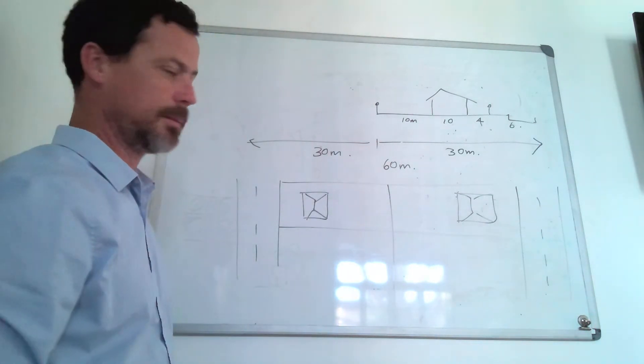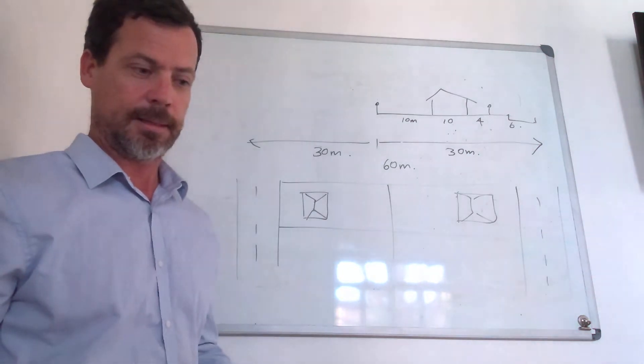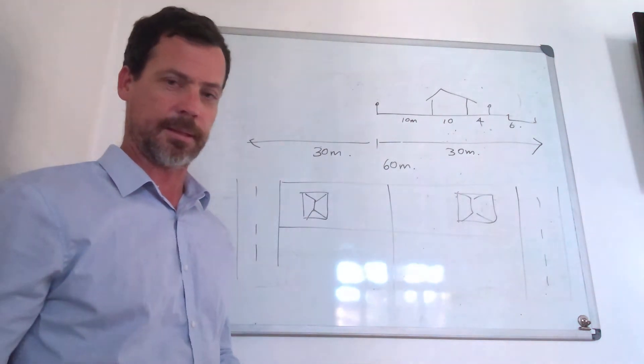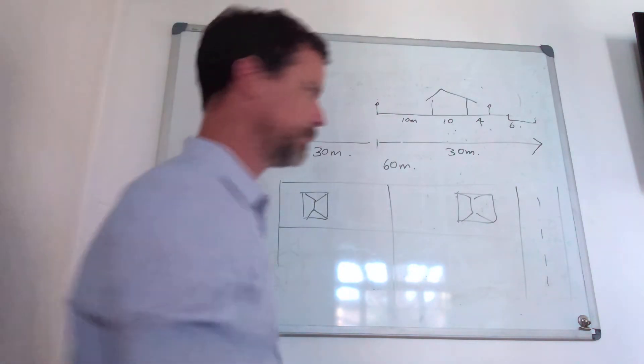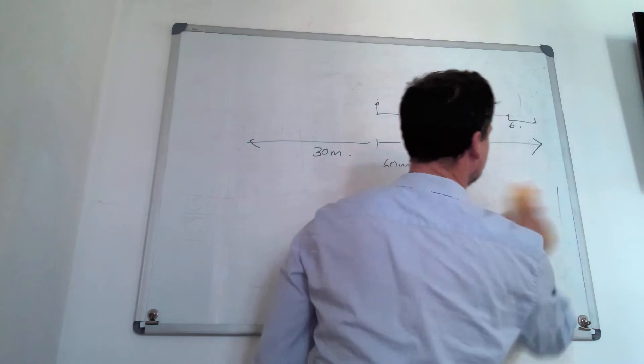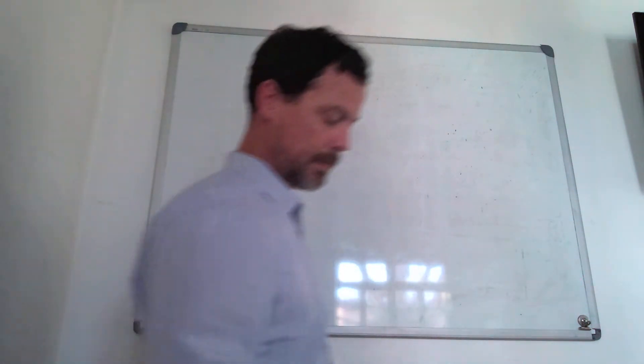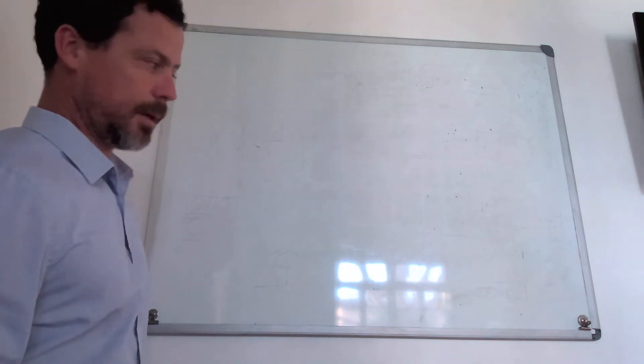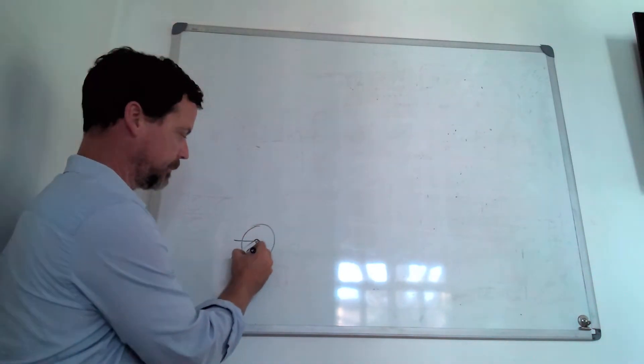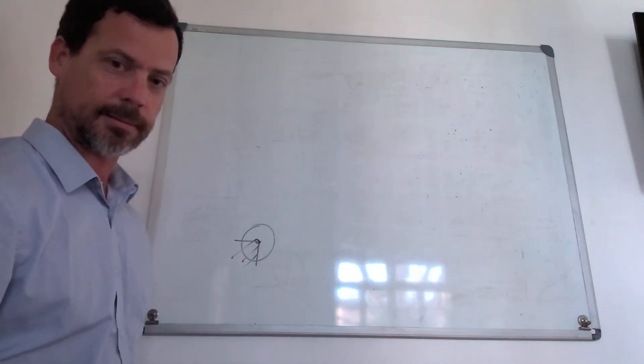Once we've determined that, we can then lay this out on the development site or allotment that we want to subdivide. So remembering that we're looking at a sector of the village center like that.